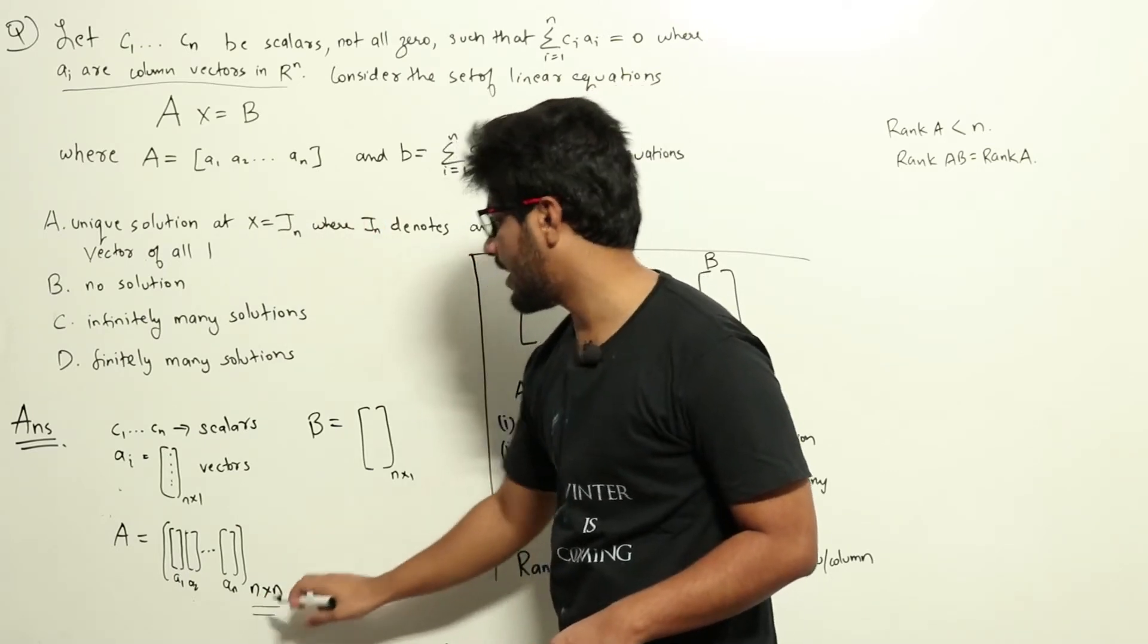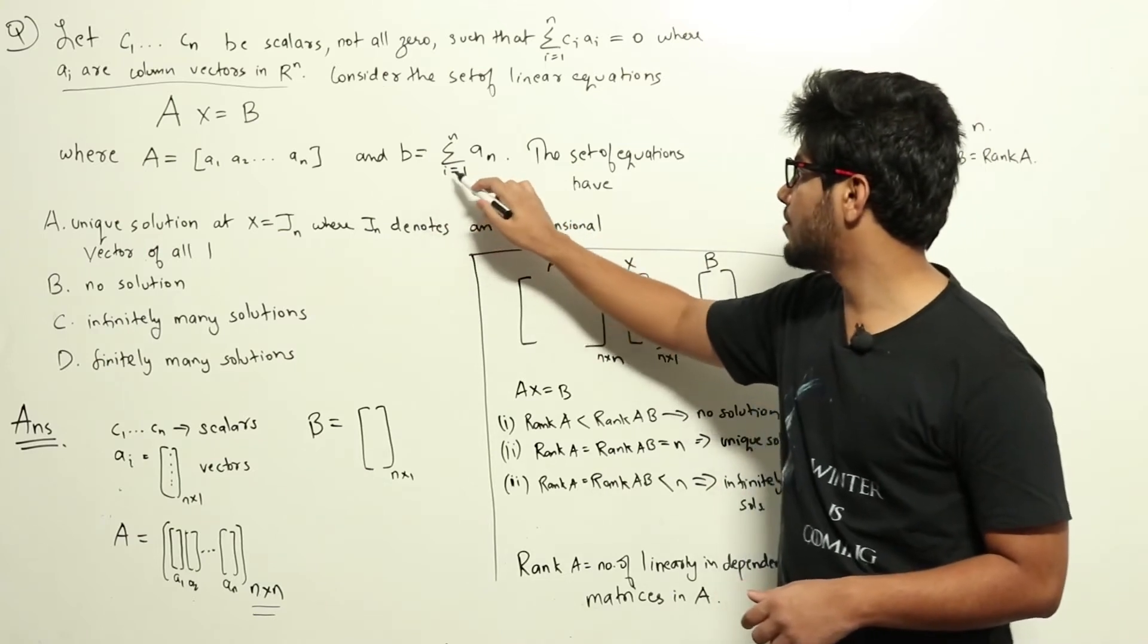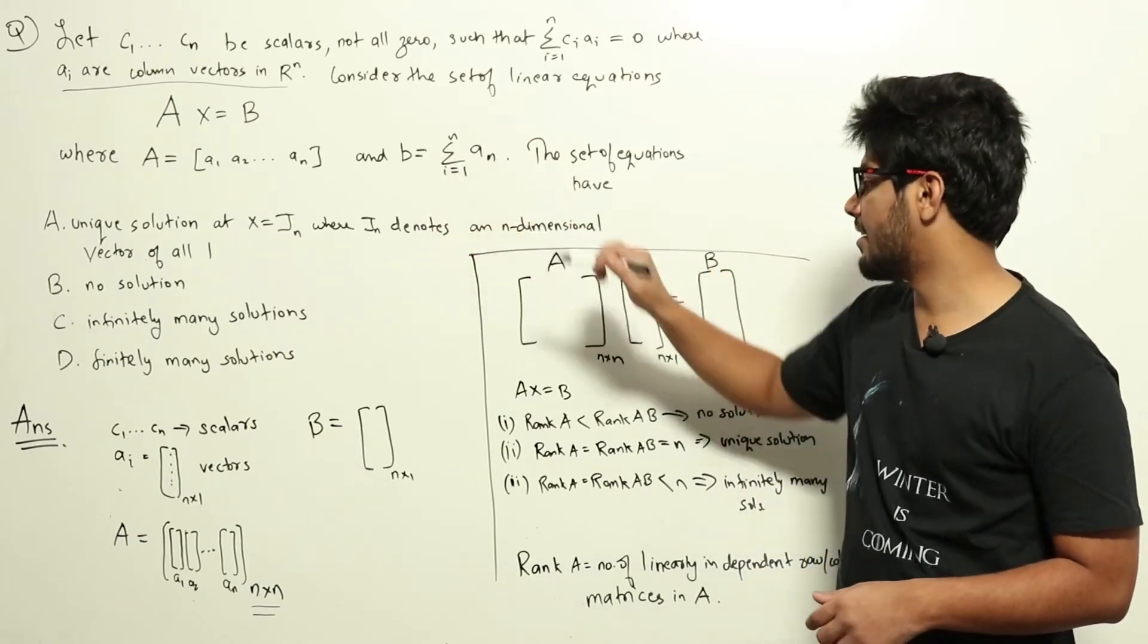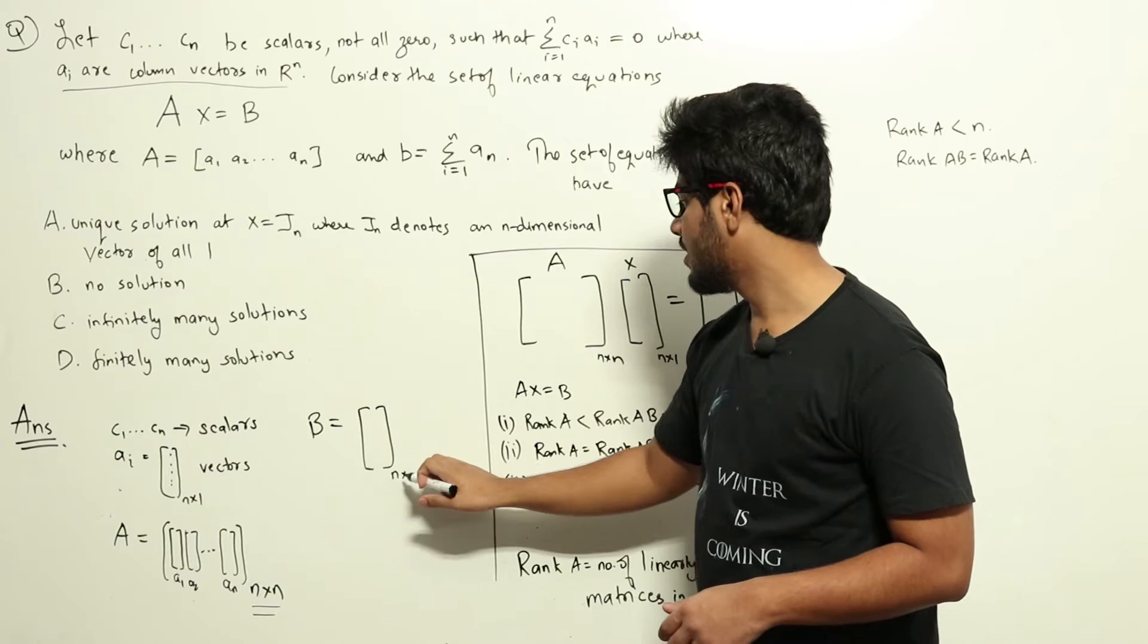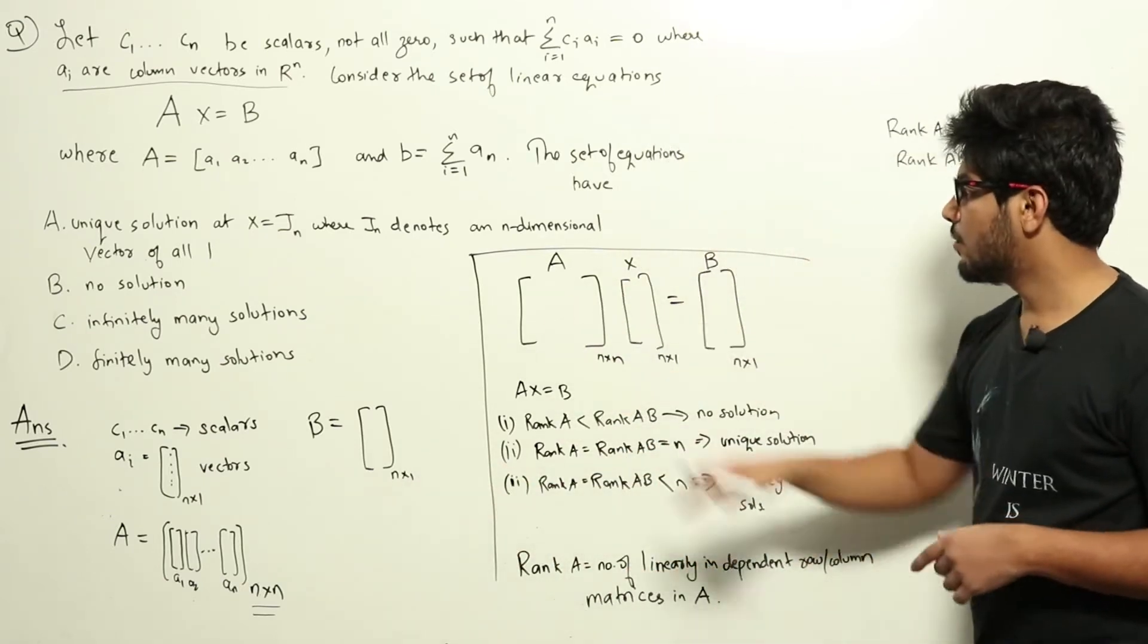So A is an n by n matrix here, and b is sigma i equal to 1 to n ai. So b is also just a column vector, just like the ai's, which is the sum of all ai's. Now we will come to the question.